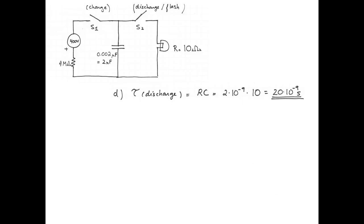Now let's find the time constant for the discharging part of the circuit. Multiplying the resistance by the capacitance again: 2 nanofarads multiplied by 10 ohms is 20 nanoseconds.